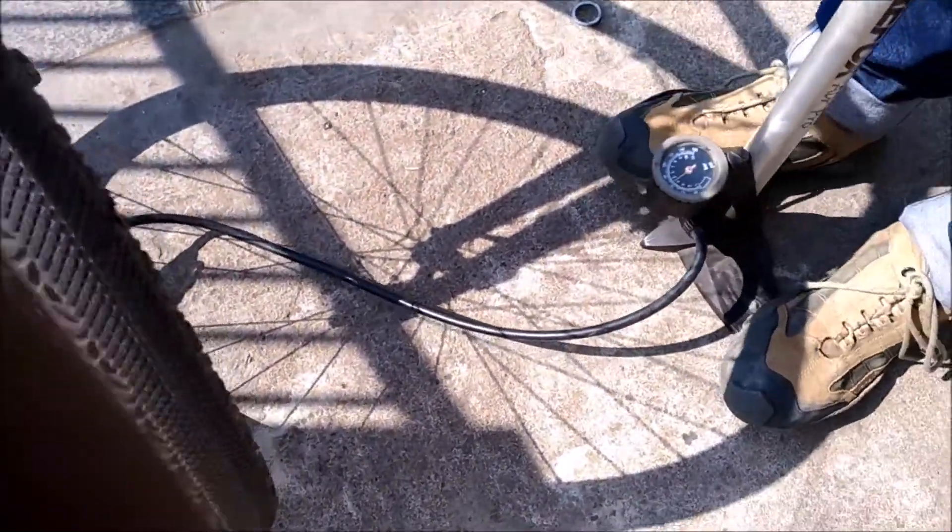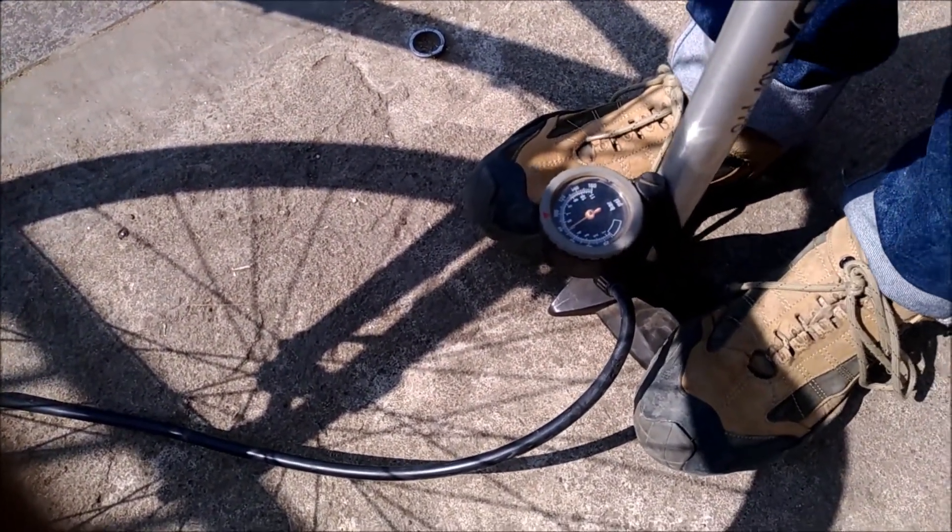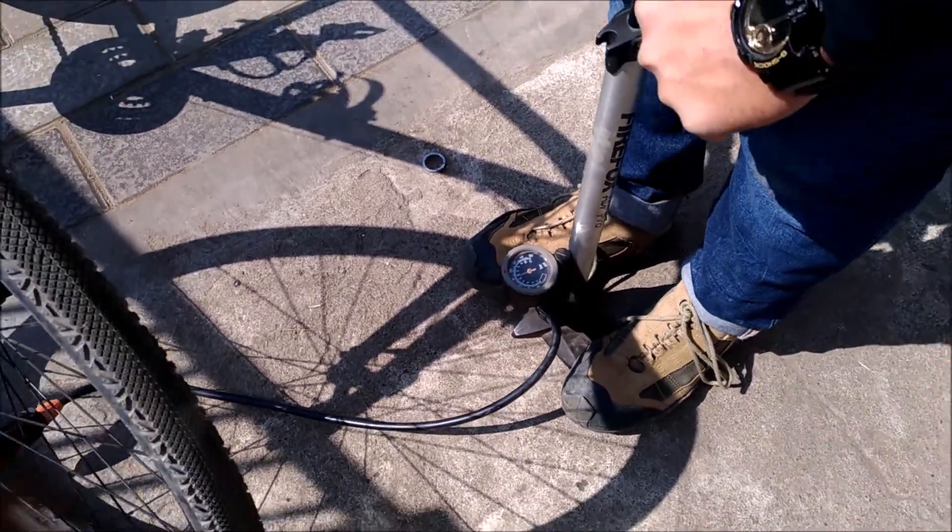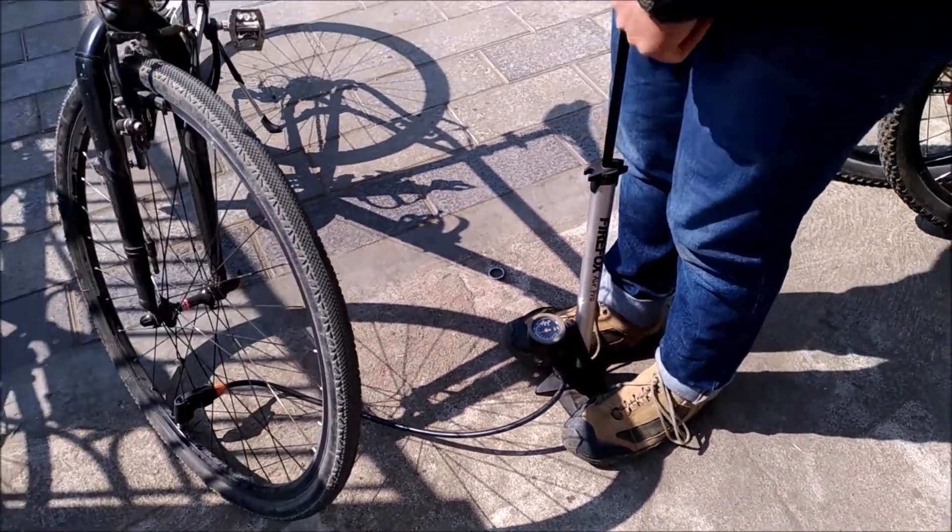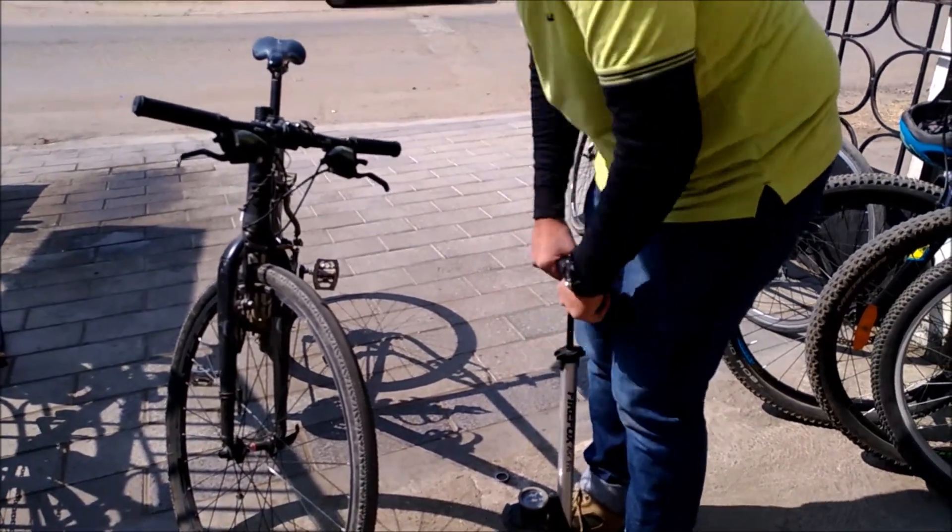To understand this, let us take the example of a tire. The air inside a tire is at a higher pressure than that of the atmosphere and thus has more energy. To fill this tire with more air, we need to do work upon the air by means of a hand pump. As we do increasing amounts of work, the pressure in the tire increases.